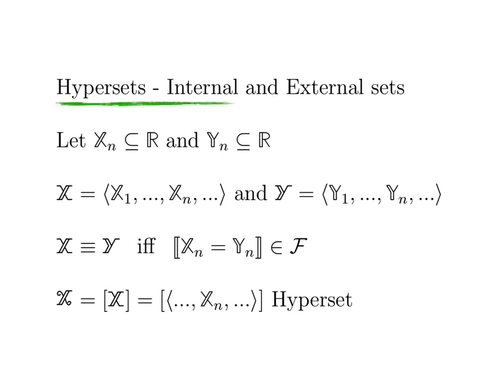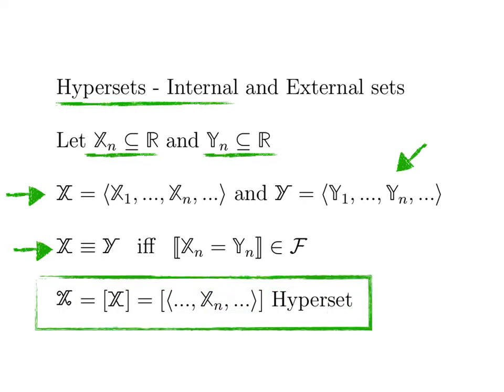Hyper-sets can be divided into two types: internal and external sets. The internal sets are the sets we can construct. Let X_n and Y_n be subsets of R. We write big X and big Y as sequences of subsets, and we say that big X is equivalent to big Y if and only if X_n equals Y_n almost everywhere. Finally, we write curly X as the equivalence class of the sequence big X. This is what we call a hyper-set.